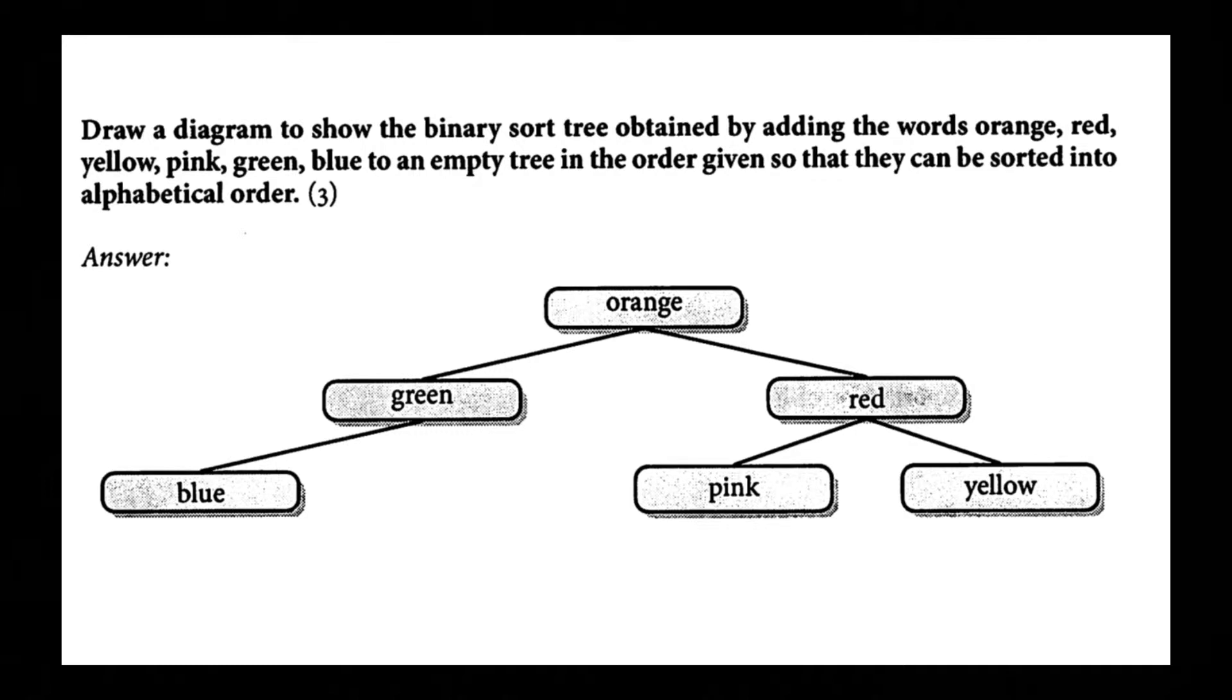Yellow is more than orange but then it is more than red. Pink is more than orange but less than red. Green is less than orange then blue is less than orange and less than green.